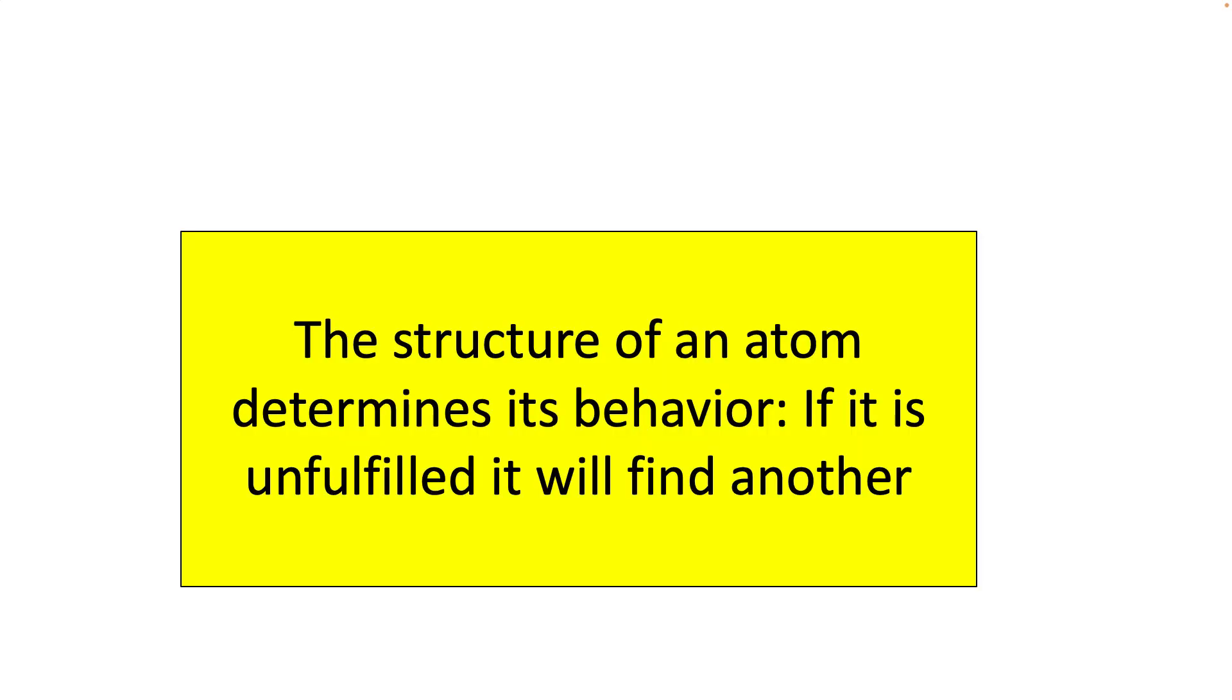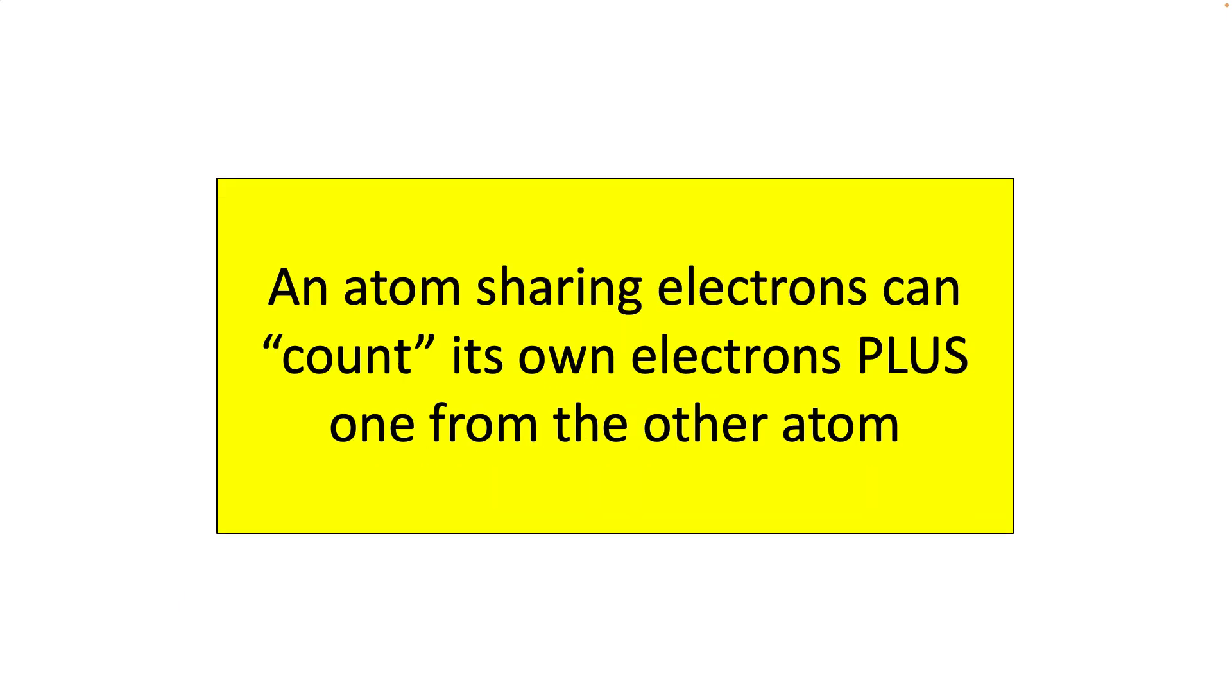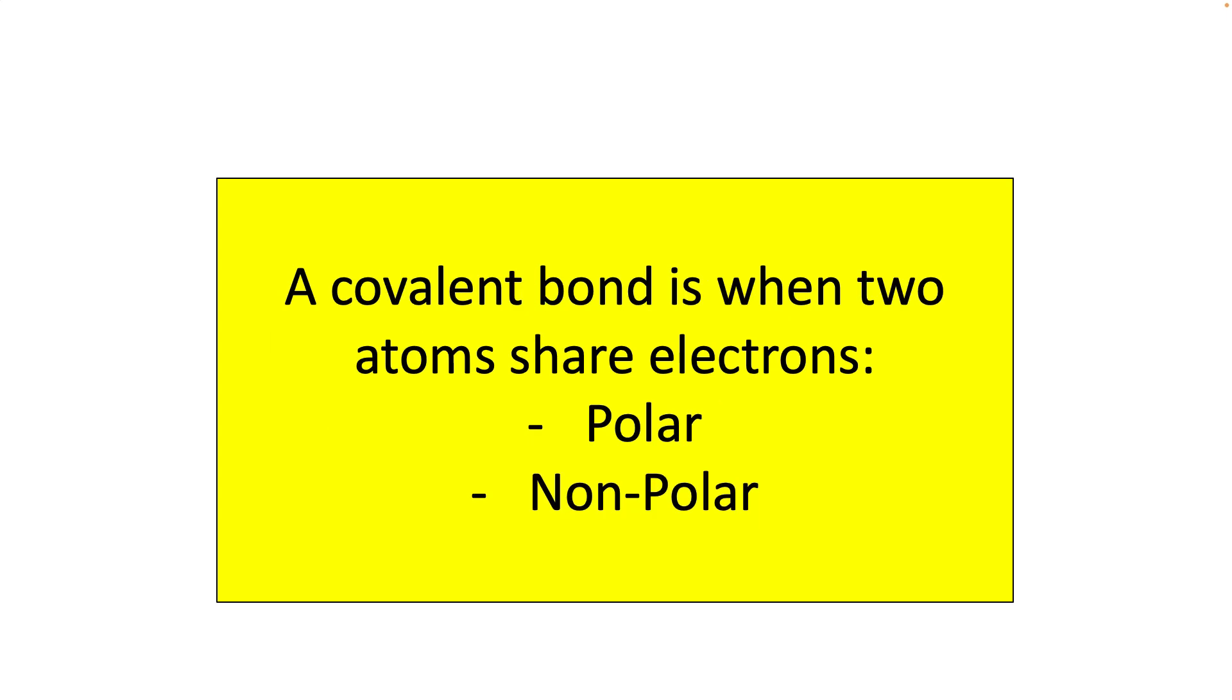So we have already learned that the reason atoms make bonds is because they aren't really happy alone. And that when they share electrons, they get to borrow another atom's electron to kind of puff up the number of electrons that they can count towards the octet rule. And we have also learned that there are two different types of covalent bonds. Polar bonds is when they are shared unequally, and nonpolar bonds are when electrons are shared equally.